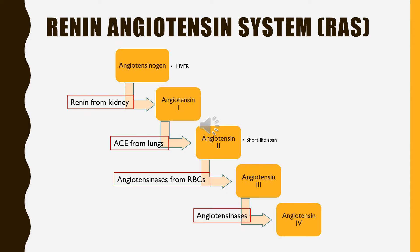Renin activates the renin-angiotensin system, which is very essential for the maintenance of blood pressure. Angiotensinogen is a glycoprotein synthesized in the liver. When renin is released into the blood, it acts on its substrate angiotensinogen and converts it into angiotensin 1. This angiotensin 1 is then converted into angiotensin 2 by angiotensin converting enzyme, mainly secreted from the blood vessels of the lungs. Hence, most of the conversion of angiotensin 1 into angiotensin 2 takes place in the lungs.